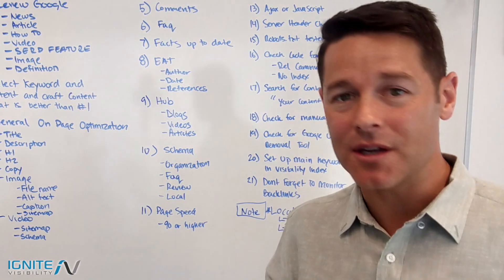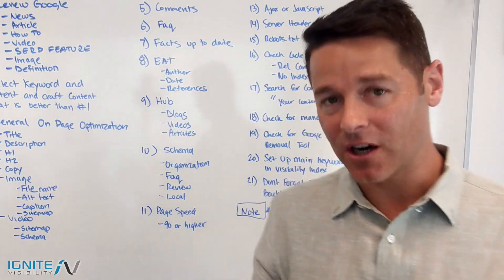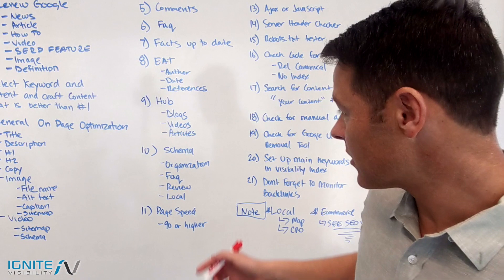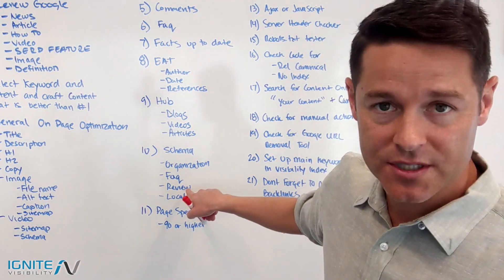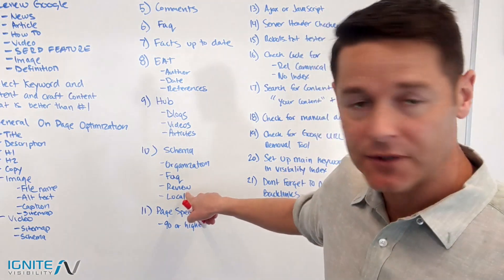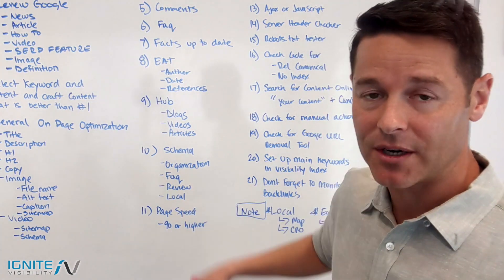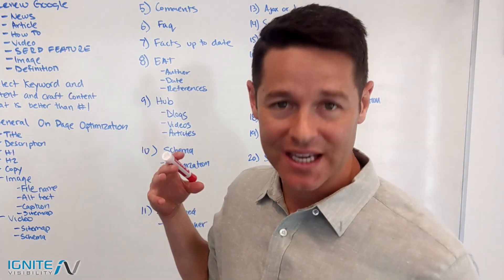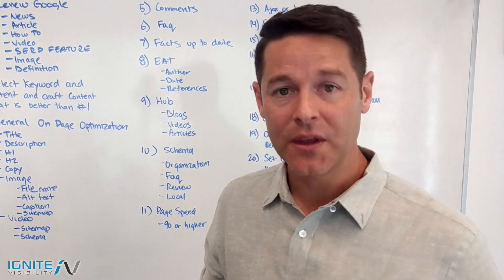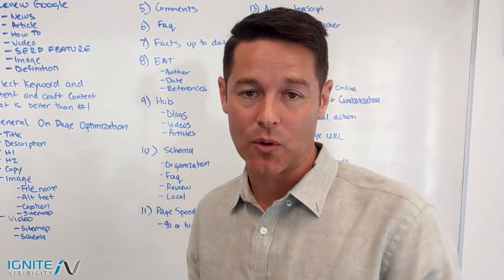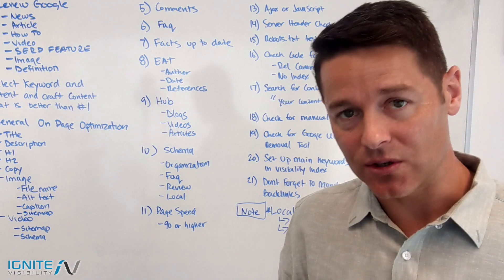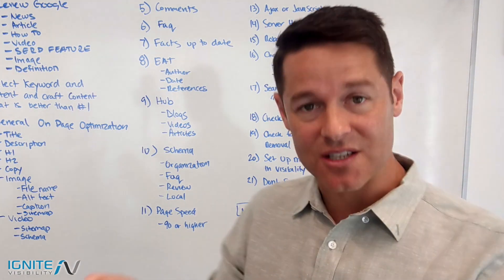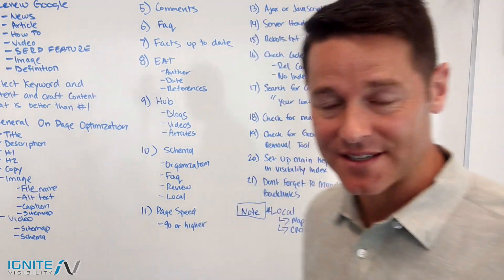Item number ten: schema is more important than ever. For your on-page SEO checklist, think about organization schema, FAQ schema, review schema, and local schema. Schema out that page as much as possible, because Google is using it more and more to pull things into the Google Assistant and into Google search features.